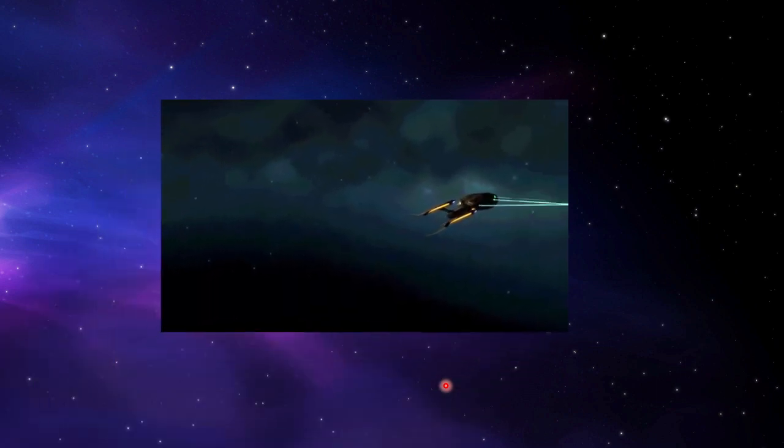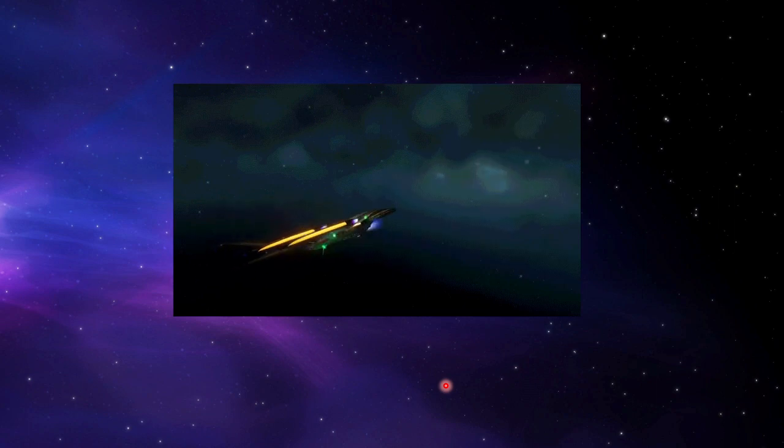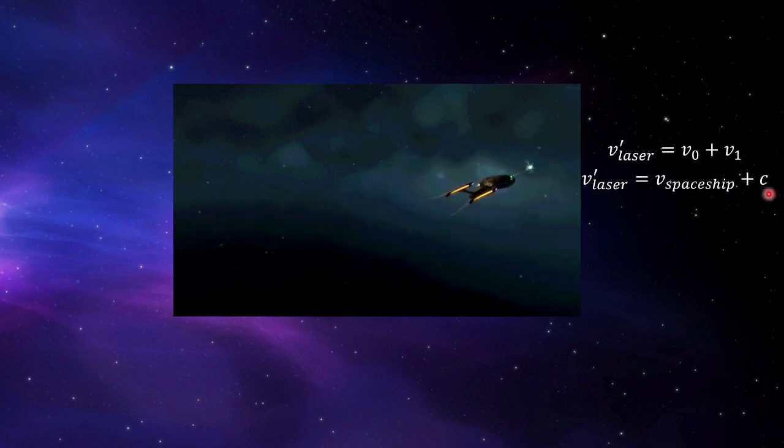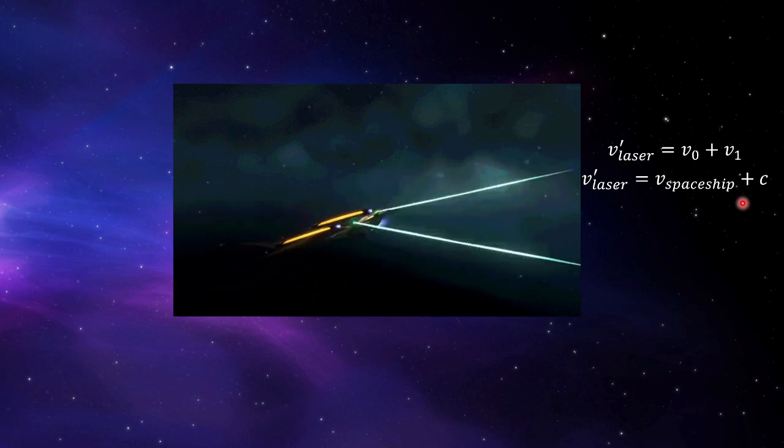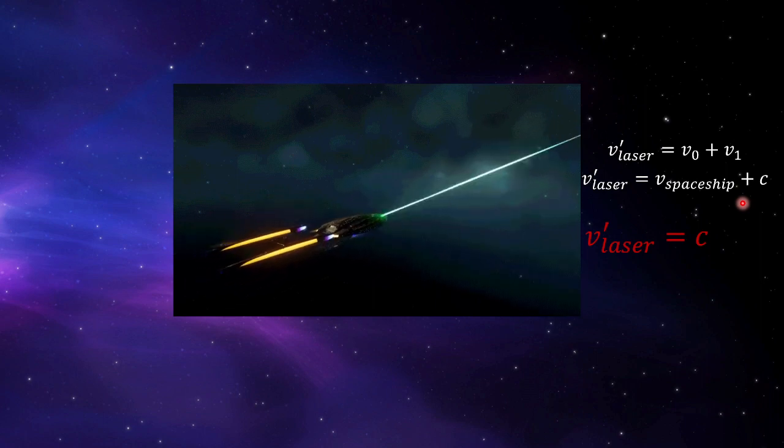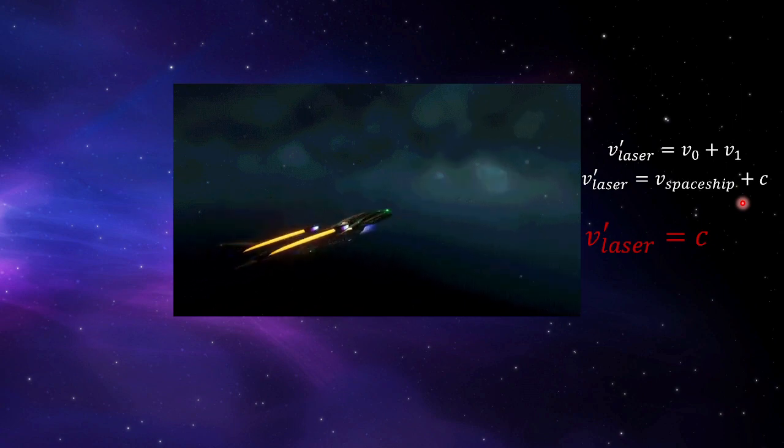And the relativity principle. For example, we have a spaceship shooting lasers at the speed of light. So according to the Galilean transformation, it will exceed c. But the Maxwell equations forbid this. So we rewrote all of those stuff. And we arrive at the expression for the relativity of time intervals.